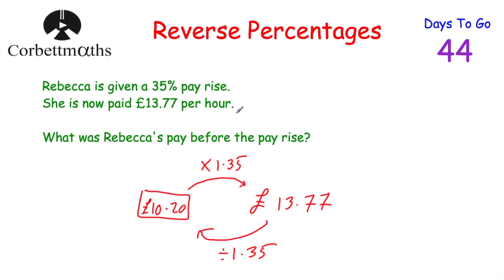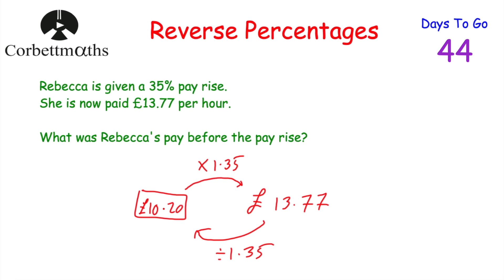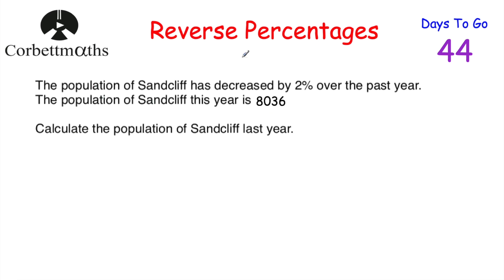You can use either of those two approaches. For non-calculator questions, I find the first approach — writing down that a certain percent equals a value, finding 1%, then finding 100% — can be quite useful, because dividing by 1.35 might be tricky without a calculator. So look at the question and decide which approach works best for you.